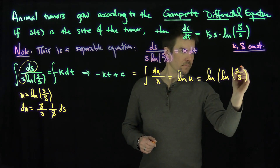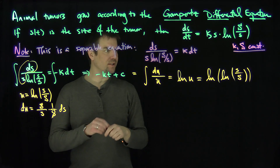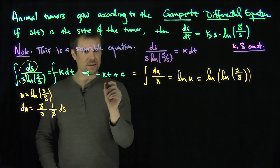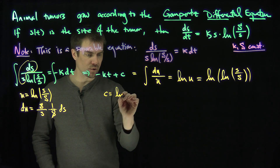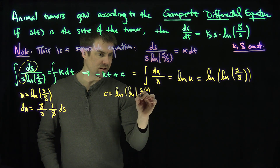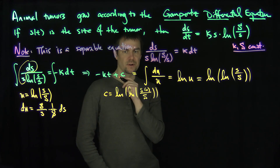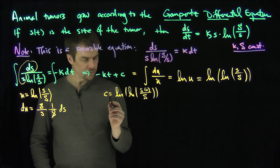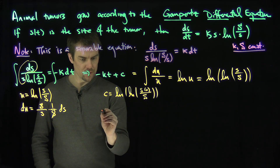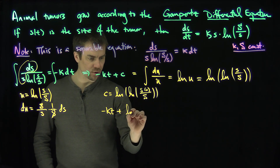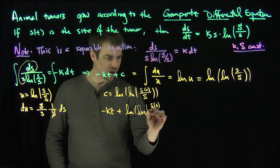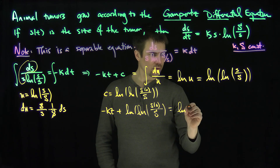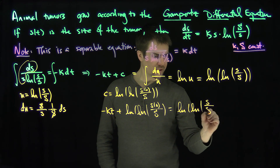Now we can find the constant c in terms of the initial condition. If I plug in t = 0, I get that c is equal to the natural log of the natural log of s₀ over S capital. So the full equation is: negative k t plus ln(ln(s₀/S)) equals ln(ln(s/S)).